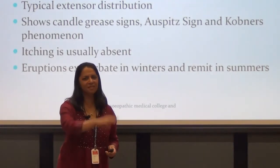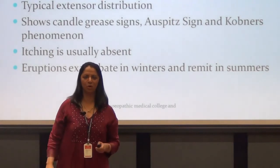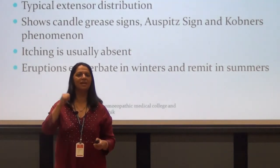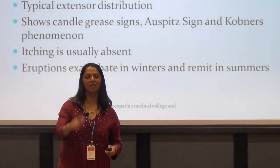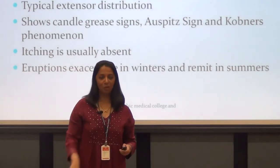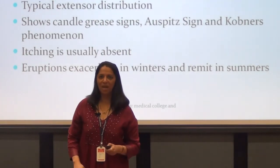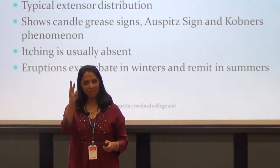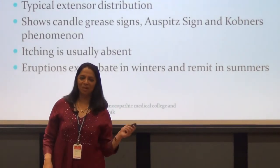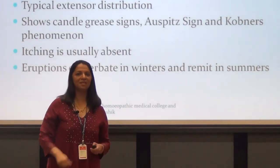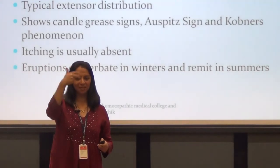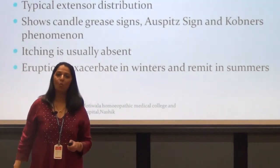There are only three diseases where Koebner's phenomenon is manifested. One is psoriasis, the second is lichen planus, and the third — this is a very important question — what is the third disease? There are only three diseases where Koebner's phenomenon occurs: psoriasis, lichen planus, and — remember this.